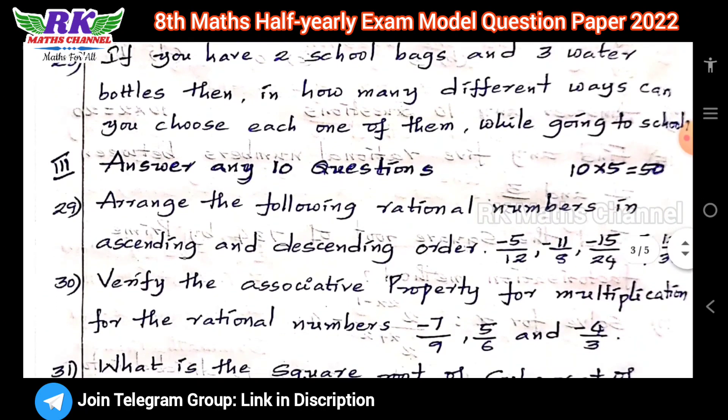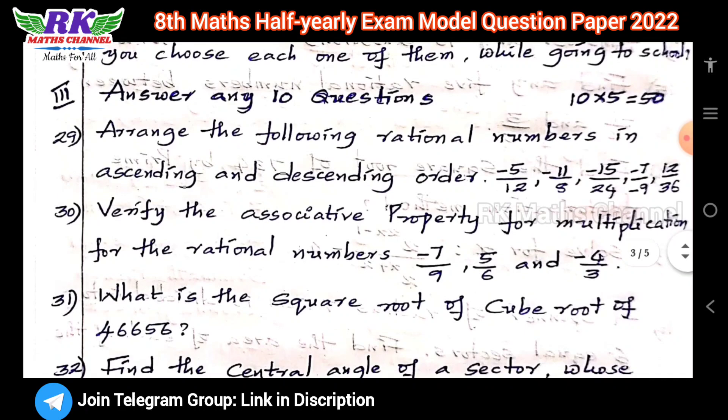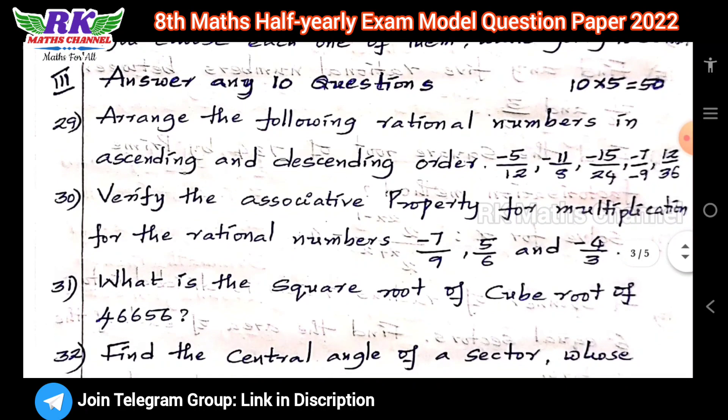Next, for the 5-mark questions: there are 14 questions total, you answer only 10 questions. That gives 10 times 5 equals 50 marks.